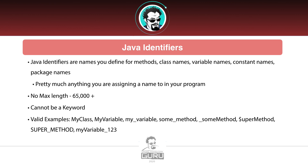There is no pragmatic maximum length for an identifier — it's over 65,000 characters, and it might even be higher than that in Java 11. You should not be naming a 10,000-character variable inside of Java; that would be absolutely crazy and there's no reason to do that. So pragmatically, there's no maximum length.